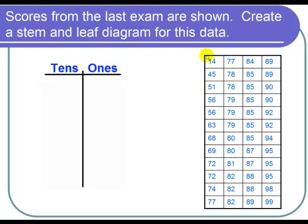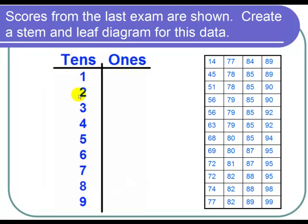Once we've done that let's look to see which stems we have. These numbers range from 14 to 99 so the tens digits will go all the way from 1 to 9. Notice that even though I don't have anything in the 20s and 30s I still include 2 and 3 under my tens digit.